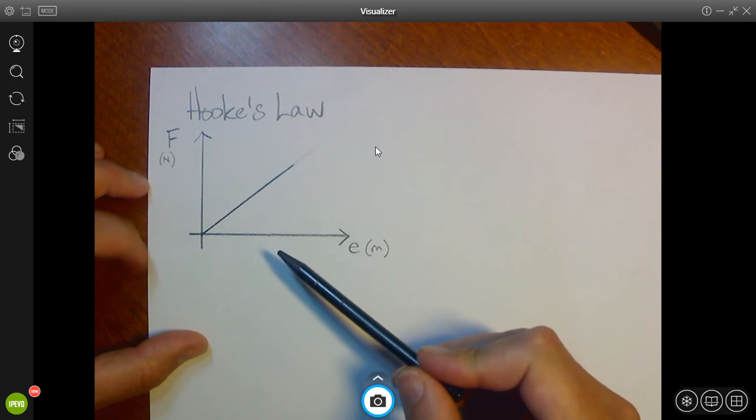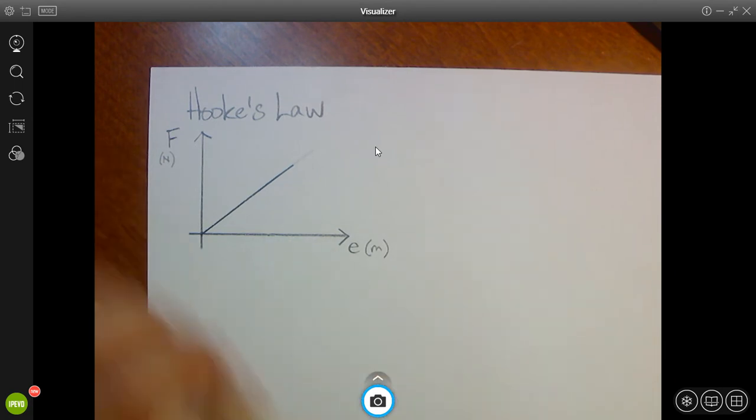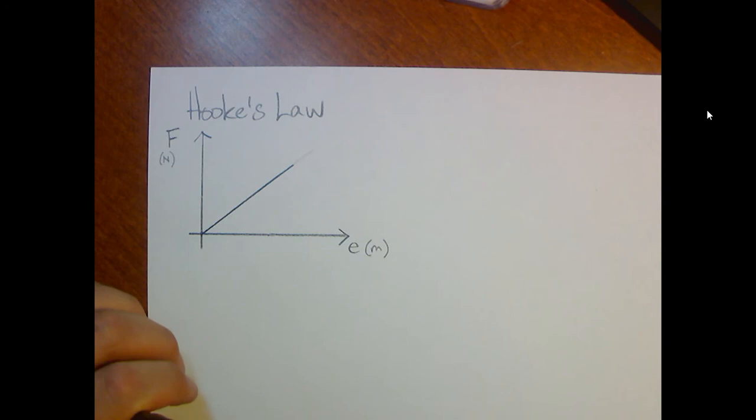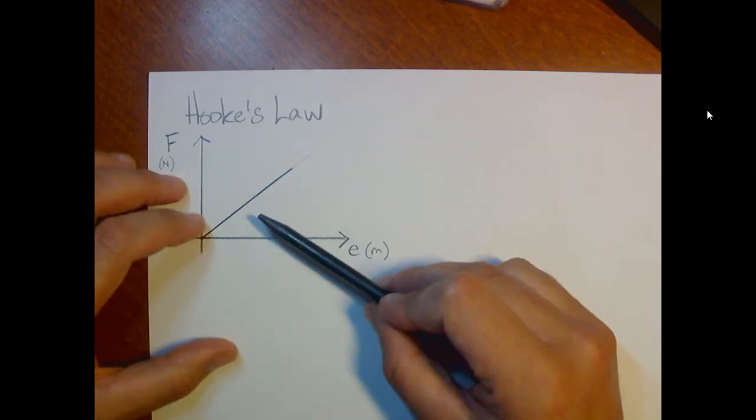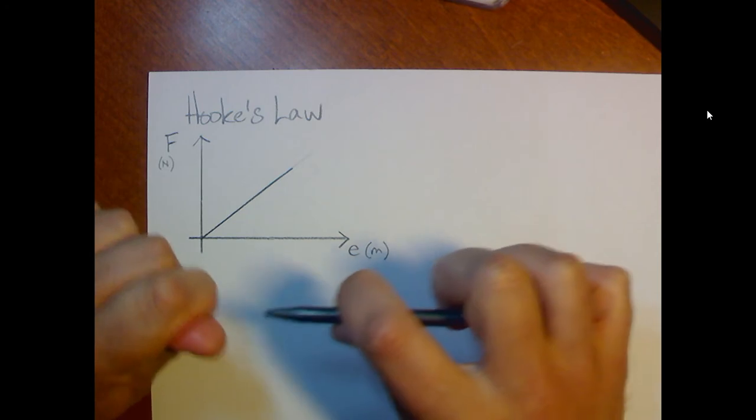And on the y-axis, we've got the force plotted and we've used the units newtons. Now, this is a sketch of what your graph will look like. I haven't put values in because your values will be different. Hopefully you've all chosen slightly different values for your spring constant.